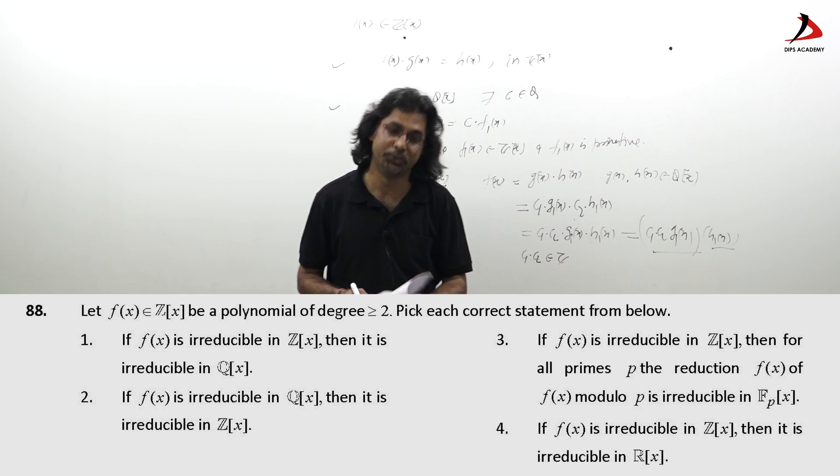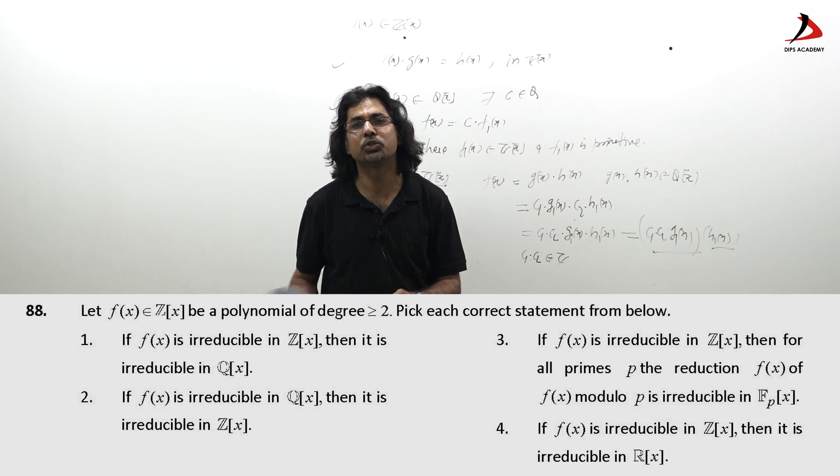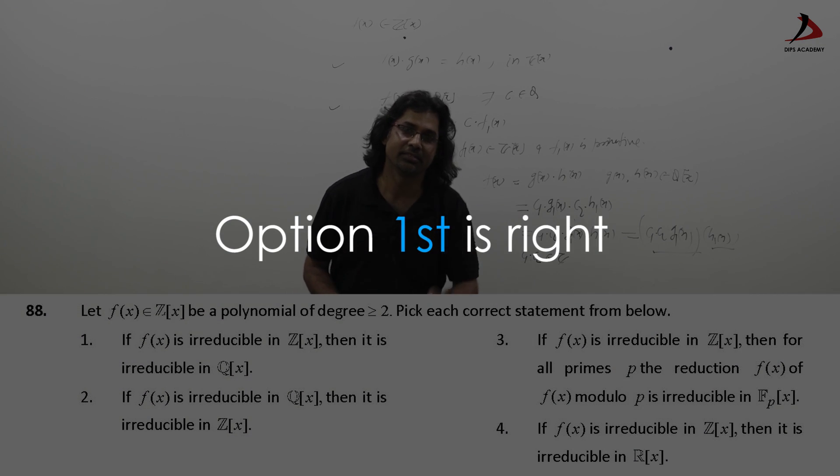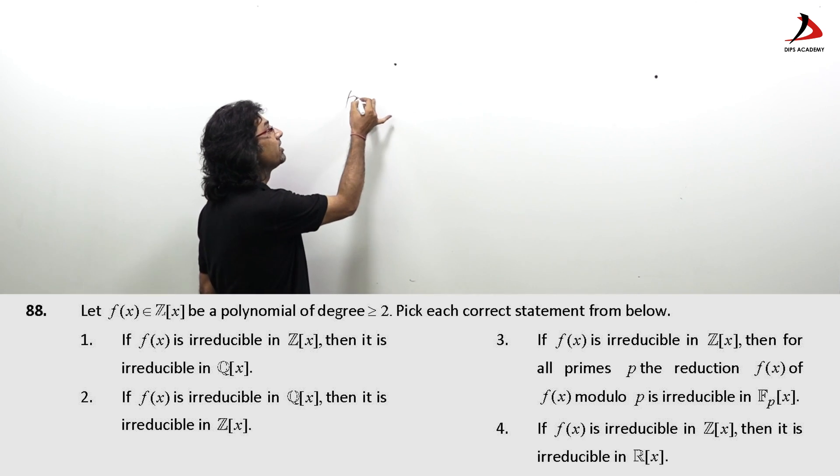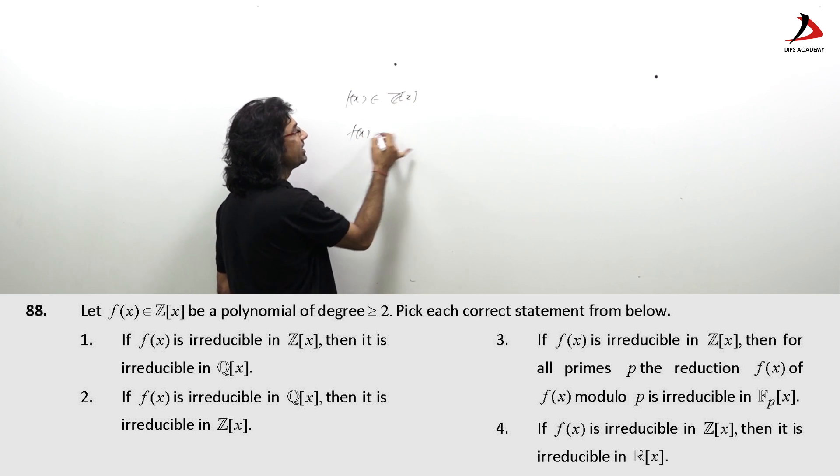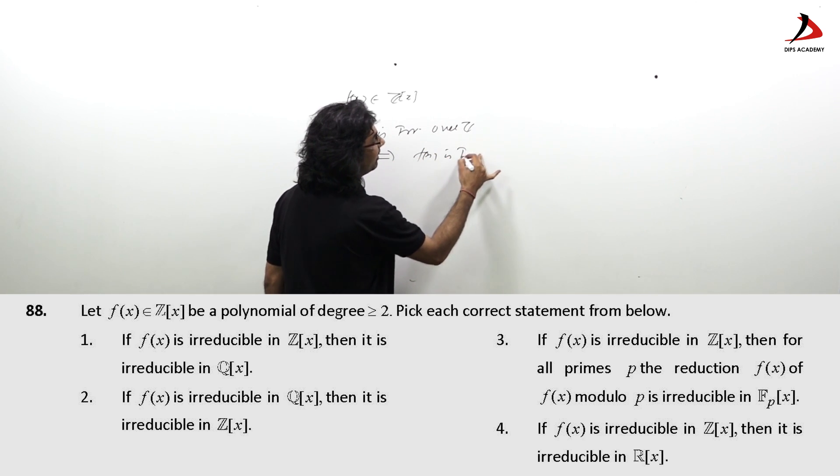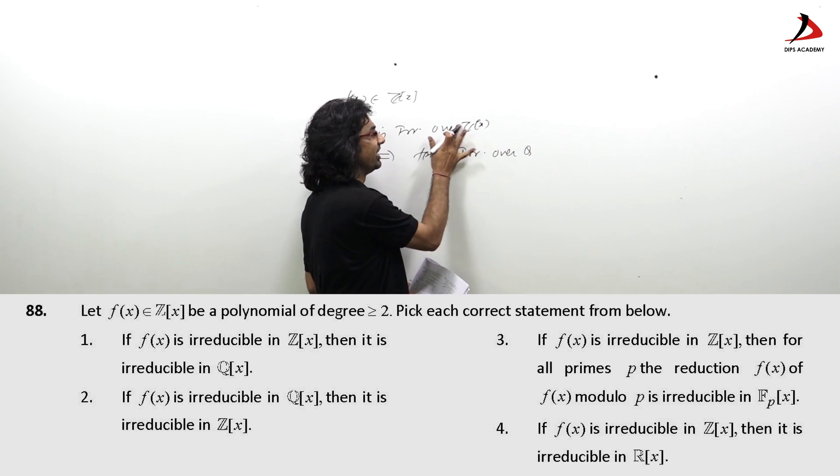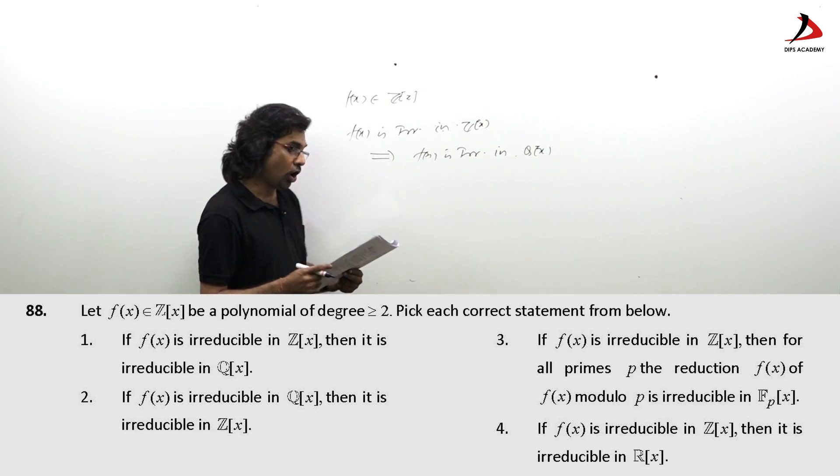So, this proof is very useful for you to select the options of that 88 question of section C booklet A where first option is of course correct which I am receiving so many queries whether it is correct or not. In my opinion I have given a proof that first option is correct. I have just proved that f belongs to Z then f is irreducible over Z implies f is irreducible over Q. So, option one is correct.